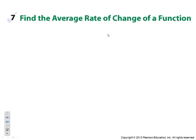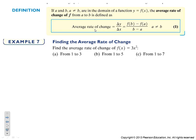The average rate of change is the change in y over the change in x. We take our b value and plug it into our function, then our a value and plug it into our function, subtract the two, and divide by b minus a — as long as a is not equal to b. For example, if f(x) = 3x², what is the average rate of change from 1 to 3?